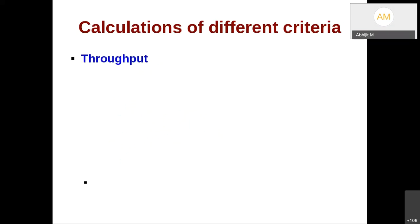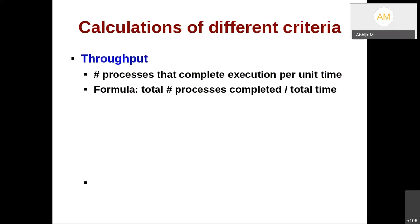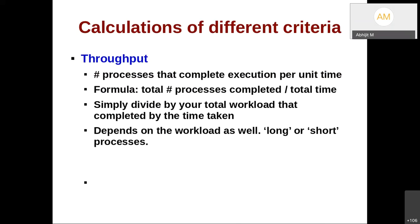Throughput is easy to calculate: total number of processes completed divided by total time. You simply divide the total time taken for the workload to complete by the number of processes. Obviously it depends on the workload — long processes versus short processes. If you have too many short processes, throughput can appear high, with tens of processes completing per second.